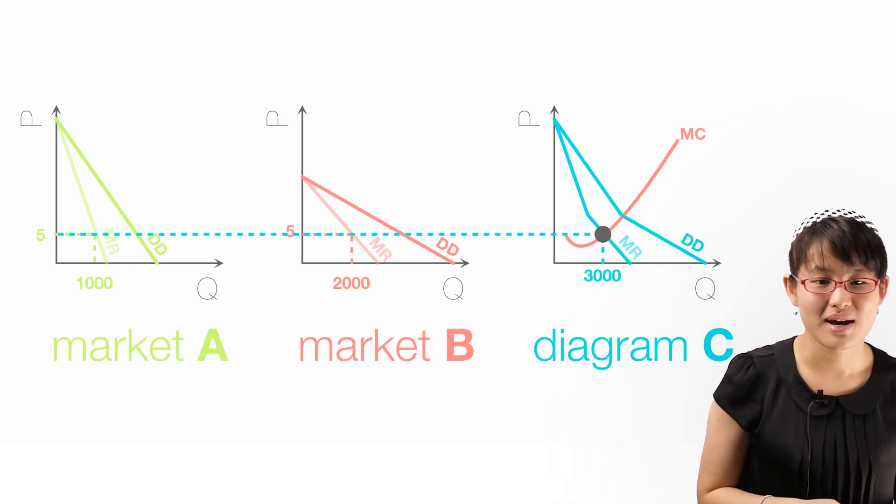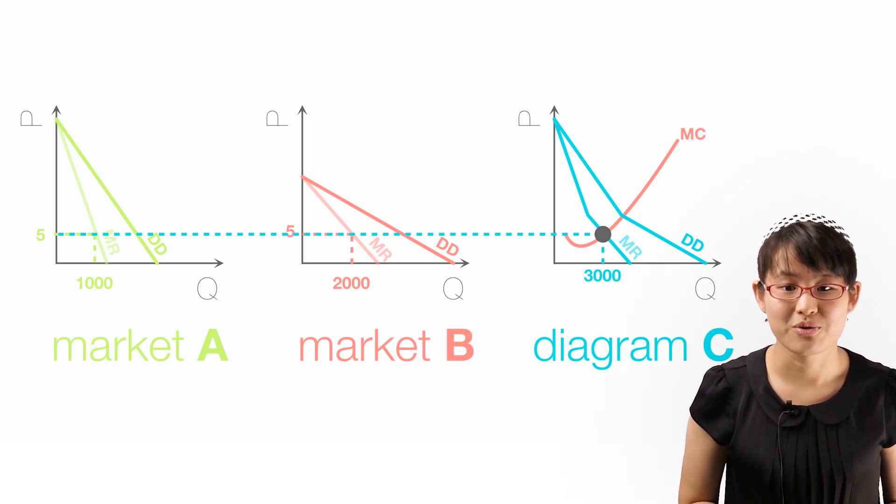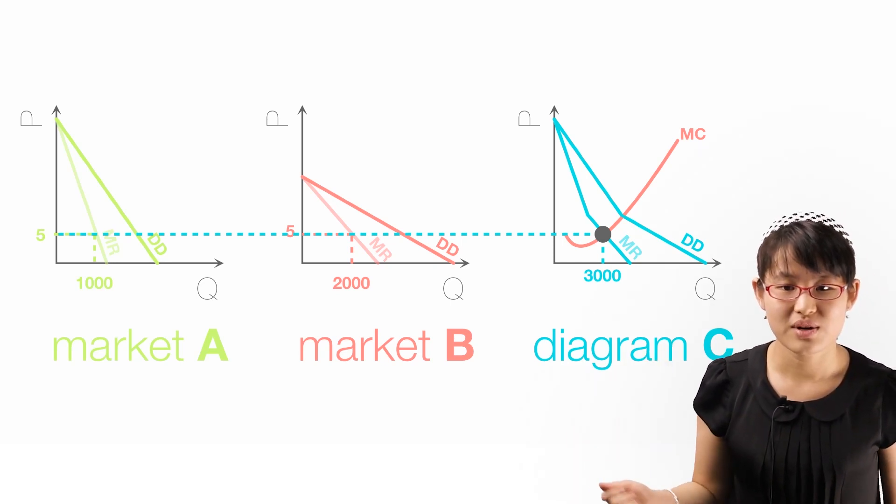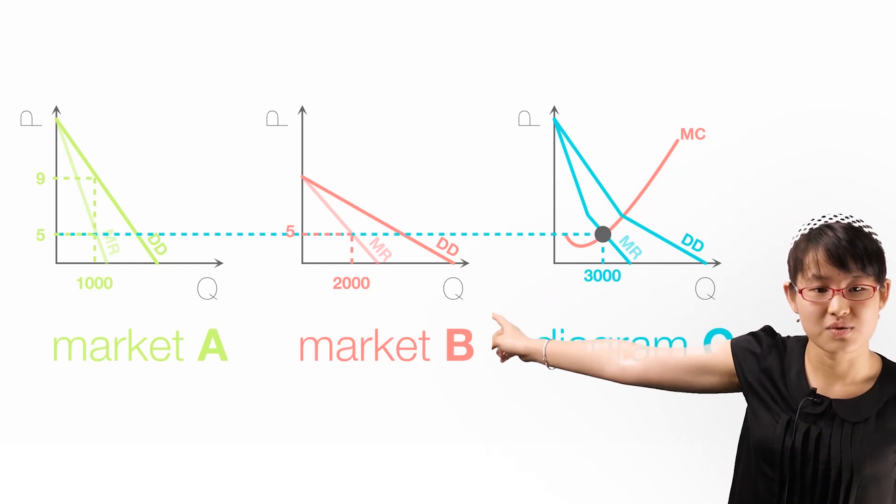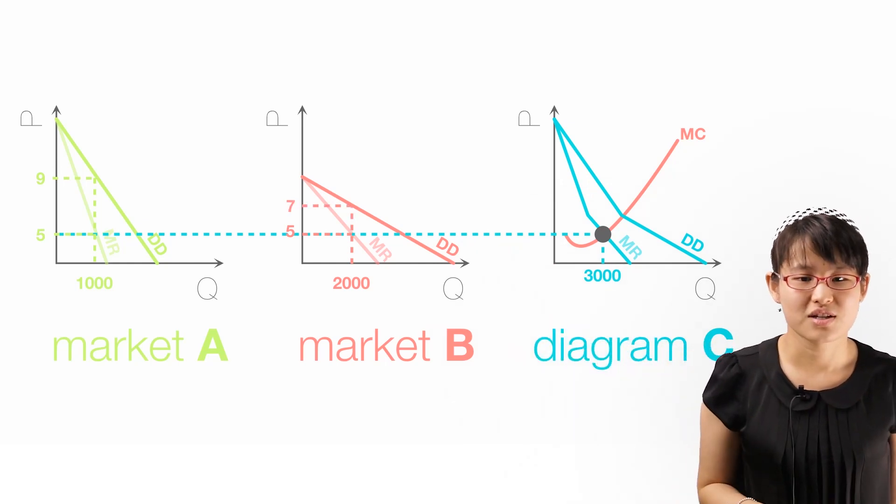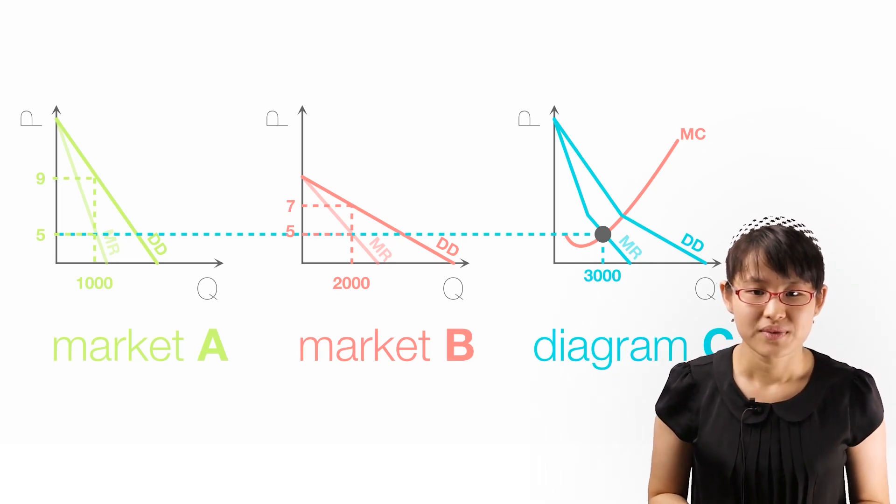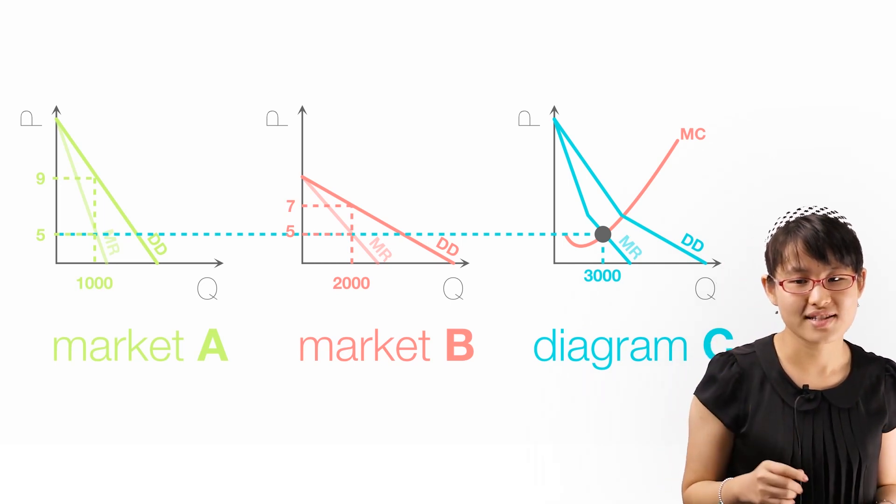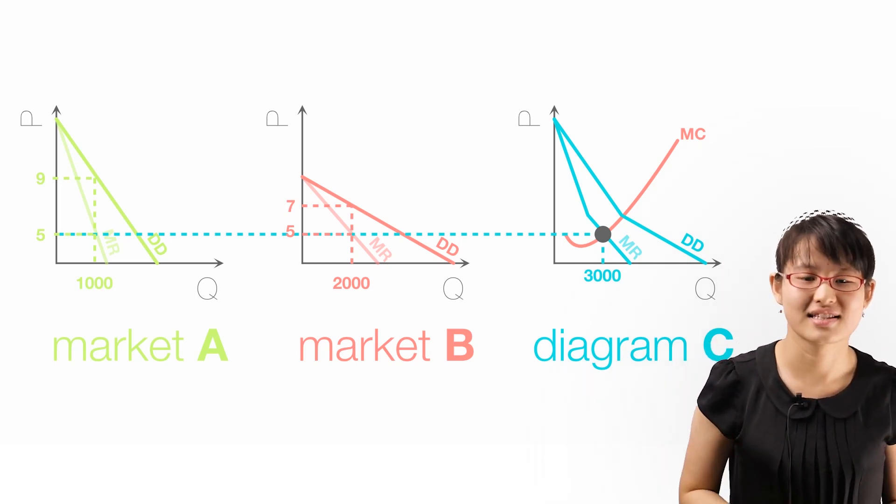The profit maximizing price in each market is given by the relevant demand curve. So, in market A, 1,000 units will be sold at $9 each, and in market B, 2,000 units will be sold at $7 each. Notice that the higher price is charged in the market with the less elastic demand curve.